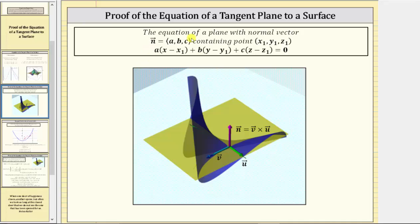Remember, the equation of a plane with a normal vector n with components a, b, c and containing the point x₁, y₁, z₁ can be given by this equation here. We will use this equation to help us derive the equation of a tangent plane to a surface.